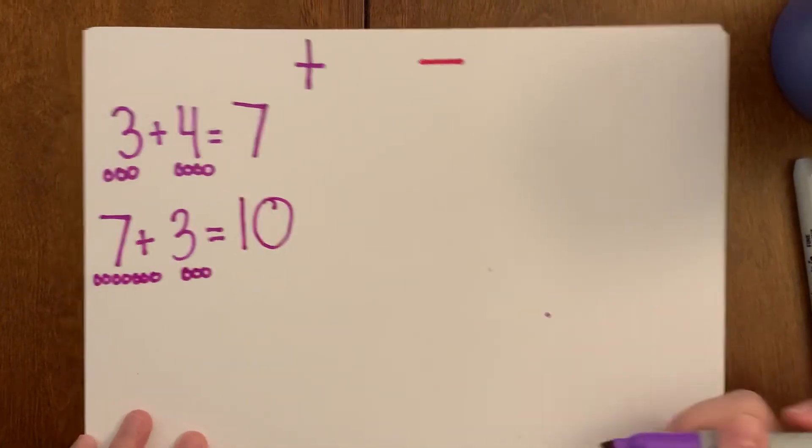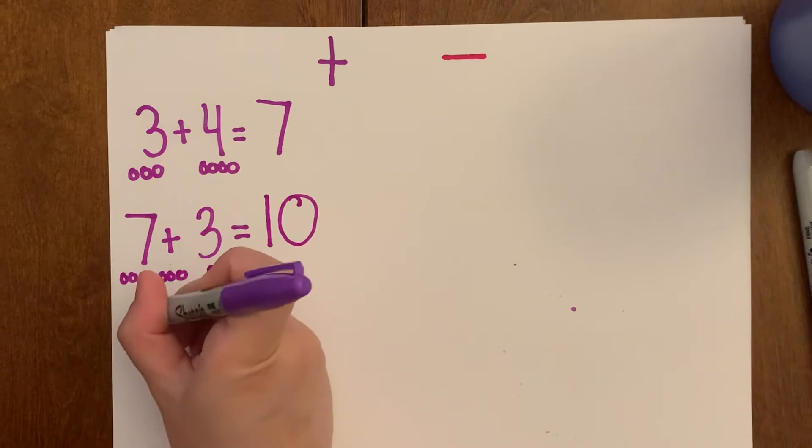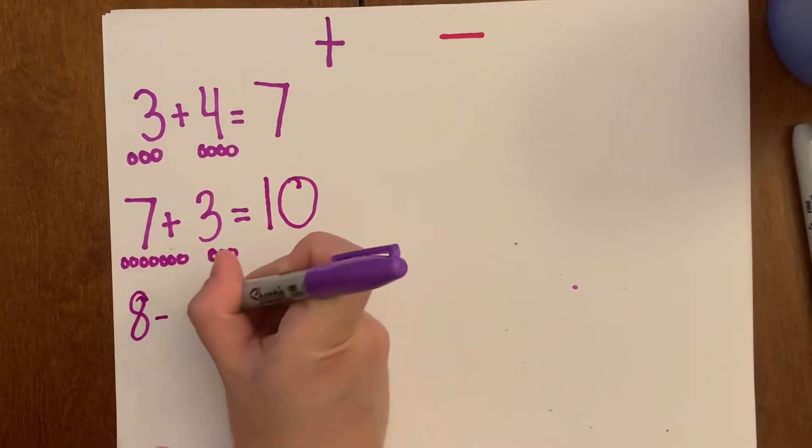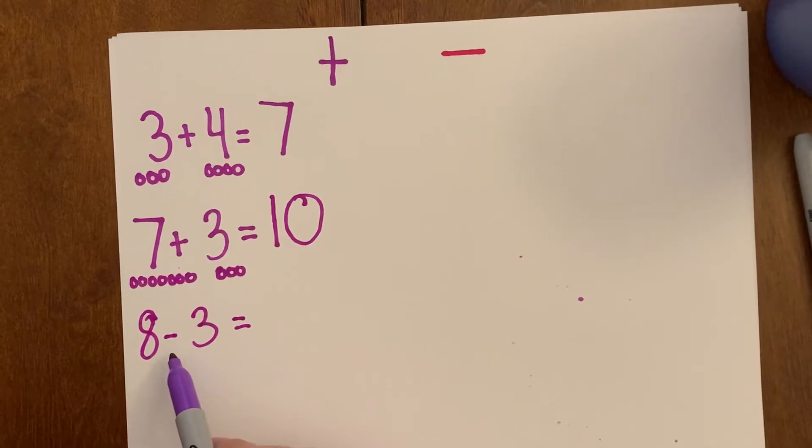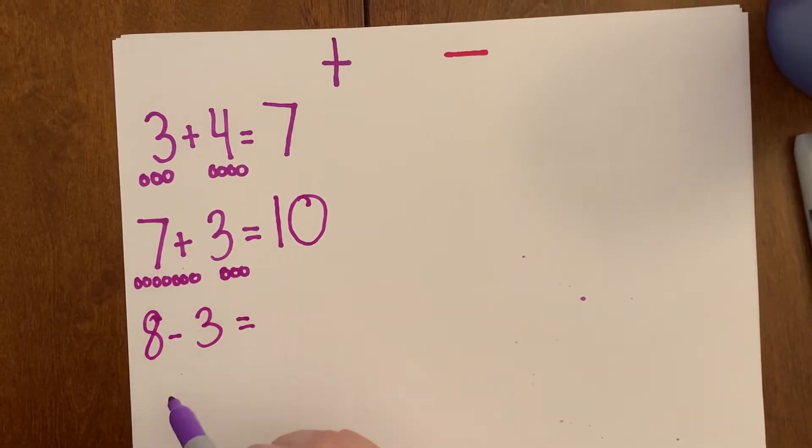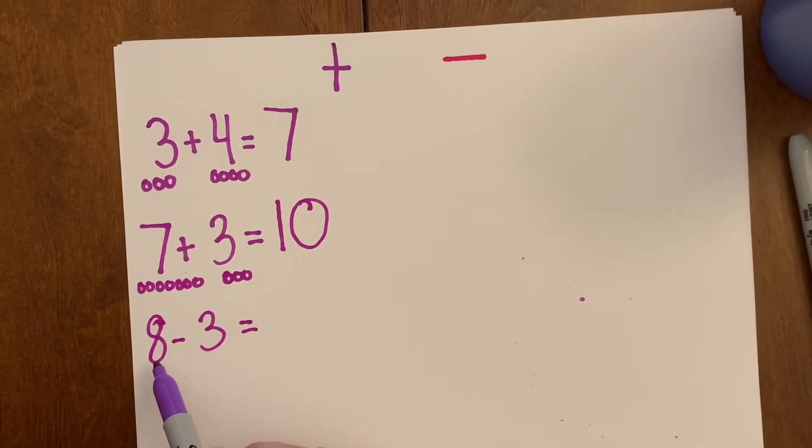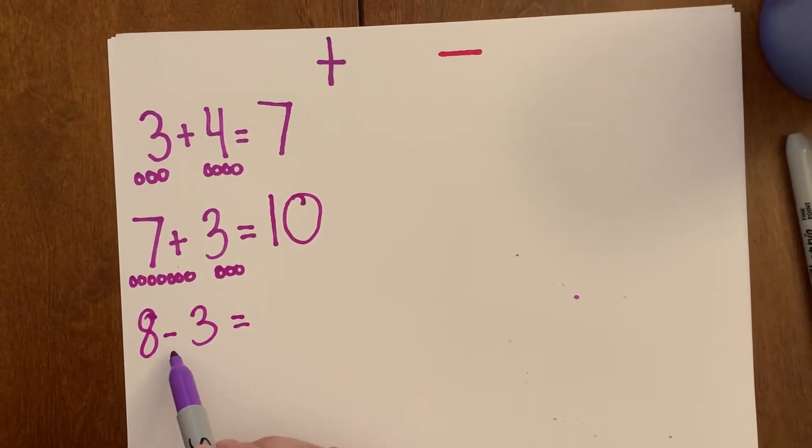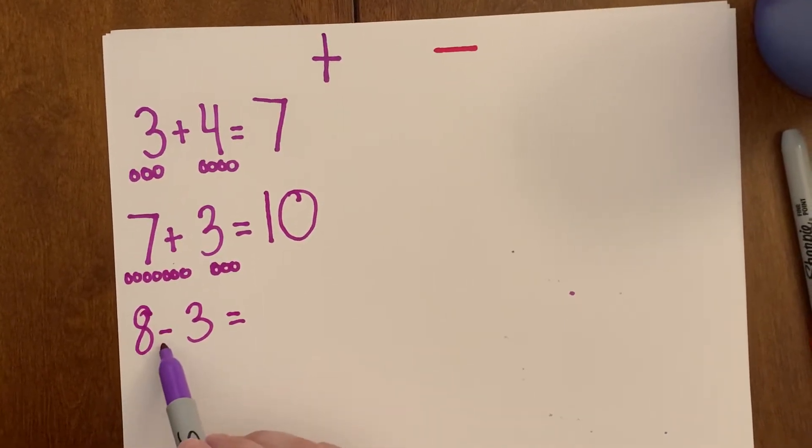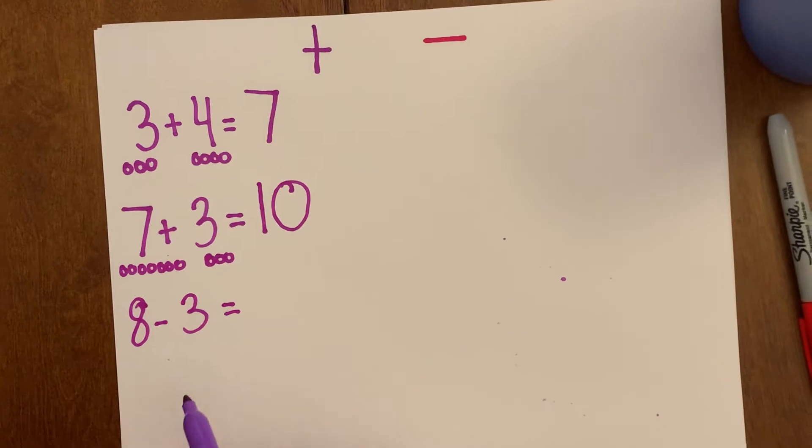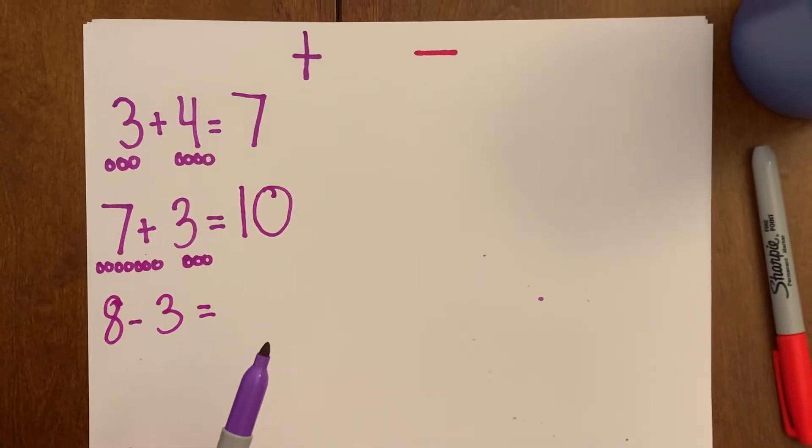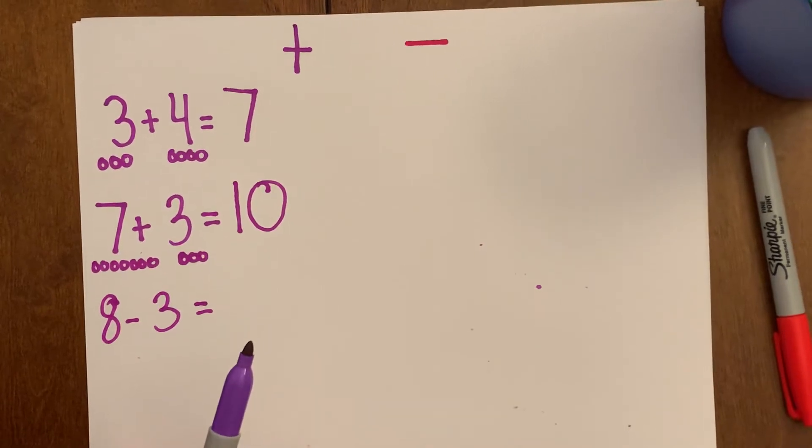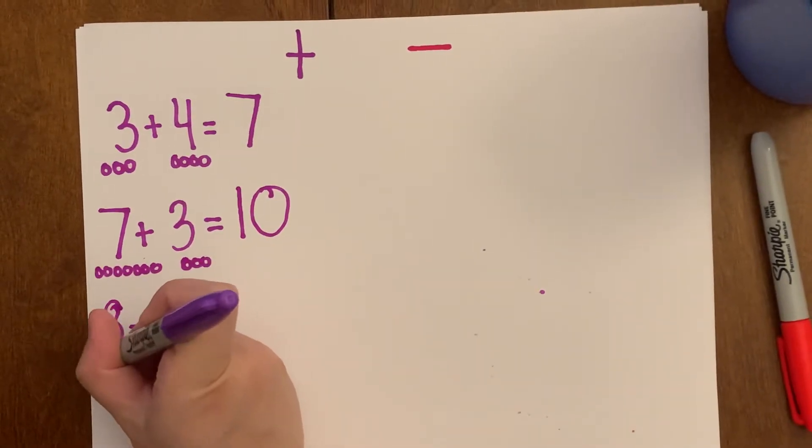Okay, next up. Eight plus minus? Uh-oh. I changed the symbol. Eight. What is this symbol? It's a minus. Eight minus three. So we are not adding our numbers anymore. We are subtracting. That means we are taking away. So we start with our big number eight.